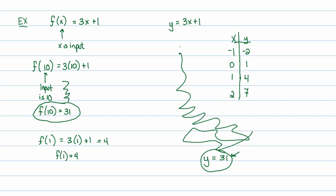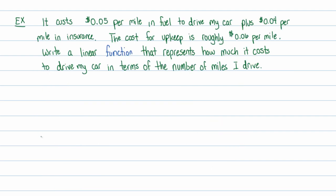In other words, when I plug in 1, I get out 4. Input, output. I could do this all day long, f of negative 3. Well, that means I go to my function, and wherever I see an x, I'm going to plug in a negative 3. 3 times a negative 3 is a negative 9, plus 1 is a negative 8. Or in other words, f of negative 3 is equal to a negative 8.